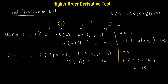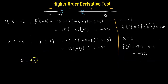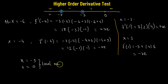Looking at each point: at x = negative 5, the sign changes from positive to negative — so this is a point of local maxima. At x = negative 3, the sign changes from negative to positive — so this is a point of local minima. At x = 0, the sign changes from positive to negative — so this is also a point of local maxima. In summary, x = negative 5 and x = 0 are points of local maxima, and x = negative 3 is a point of local minima.